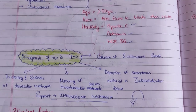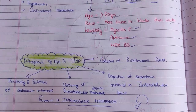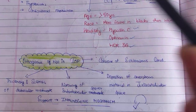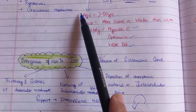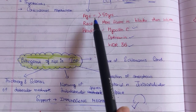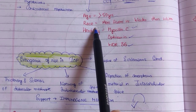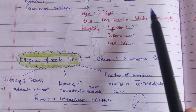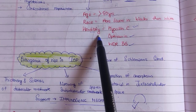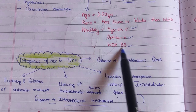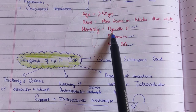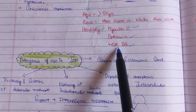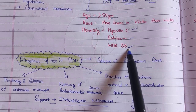Regarding age, individuals above 50 years are more predisposed. Regarding race, it is more severe in blacks than whites. Regarding heredity, there is an association with three genes: myocilin, optineurin, and WDR-36.